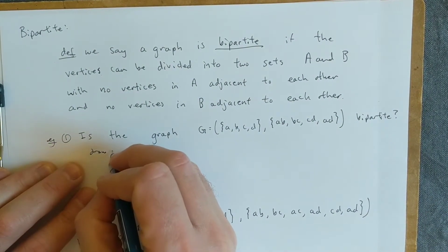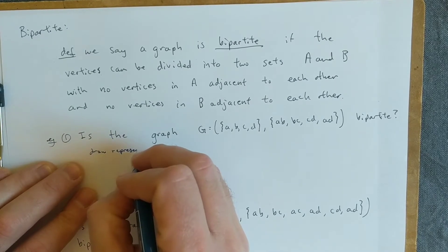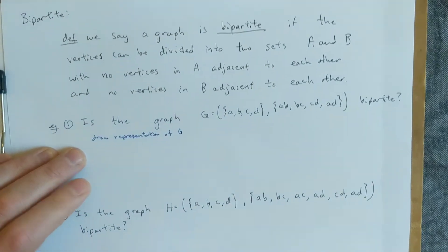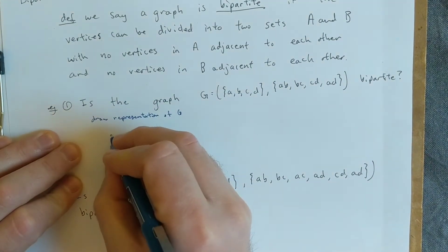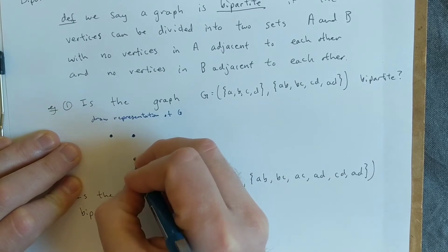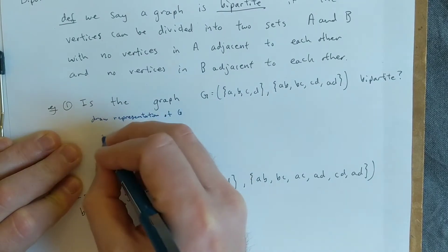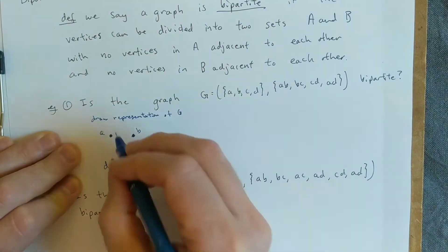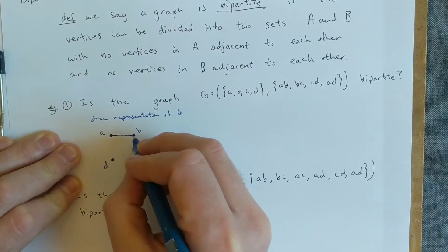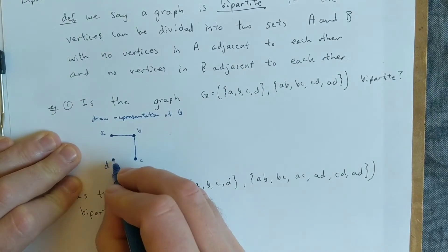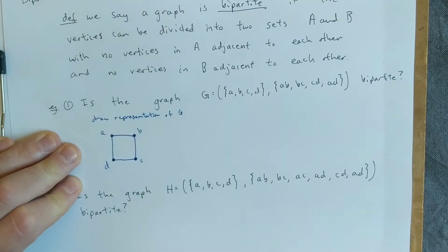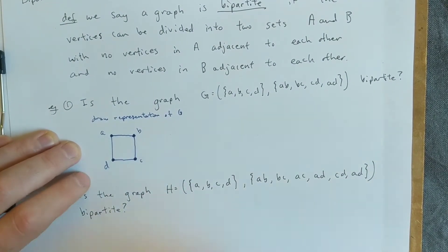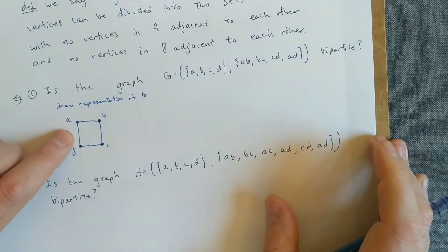So let's get a graph. We have A, B, C, D, and the connections are A to B, B to C, C to D, and A to D. Okay, so you could draw this as a square, right? So the question is: is this bipartite? Is there a way that I can collect these into two sets?